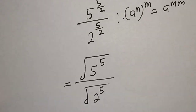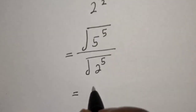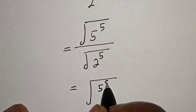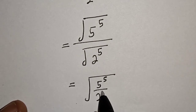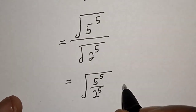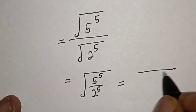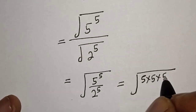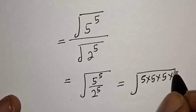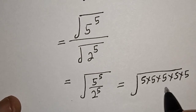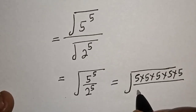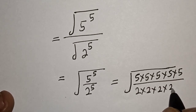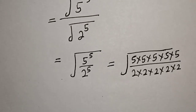This is equal to the square root of 5 raised to the power of 5, over 2 raised to the power of 5. Now, 5 raised to the power of 5 is 5 times 5 times 5 times 5 times 5, and 2 raised to the power of 5 is 2 times 2 times 2 times 2 times 2.